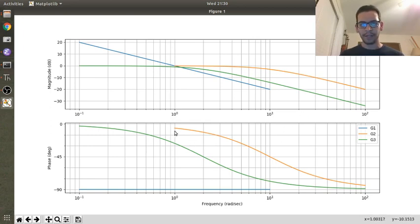Same thing with a phase plot, it's zero at the beginning, and then at my cutoff frequency it's minus 45, and then it drops down to minus 90.